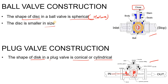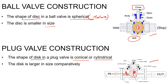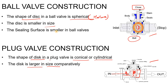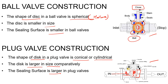In the ball valve, the disc is smaller — it depends on the size and where you are installing the valve, but most of the time the disc is in the shape of the ball. In the case of the plug valve, the disc is relatively larger in size compared to the ball valve. The sealing surface in the ball valve is smaller, as you can see here — this blue area is your sealing surface. In the plug valve it is larger, because if the sealing is not better there could be leakage.